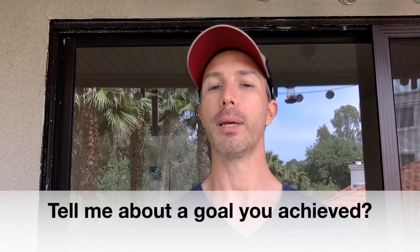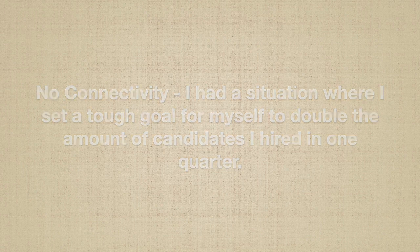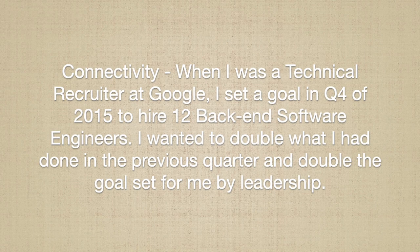First, I really want you to simplify. Assume that your audience knows nothing, so if you're using acronyms or very industry-specific items, slow down and ask: is it definitely 100% true that my audience would understand everything? For example, let's say I'm interviewing for a technical recruiter role at Facebook focused on Instagram, and the question is tell me about a goal you achieved. A no-connectivity answer would be: I had a situation where I set a tough goal for myself to double the amount of candidates I hired in one quarter. Now a connectivity answer would be: when I was a technical recruiter at Google I set a goal in Q4 of 2015 to hire 12 back-end software engineers — I wanted to double what I had done in the previous quarter and double the goal set for me by leadership.